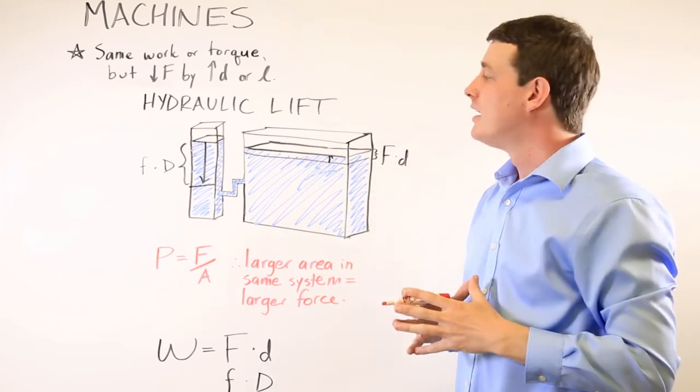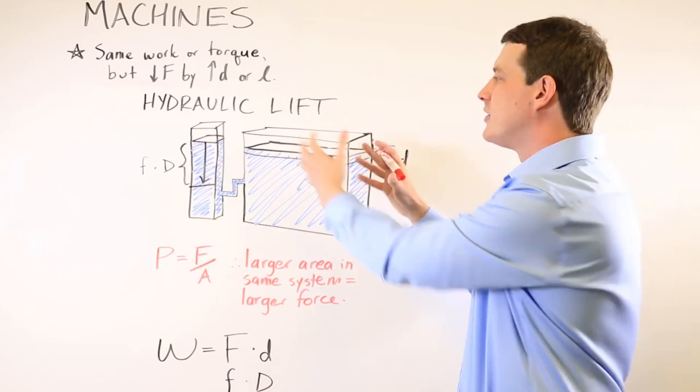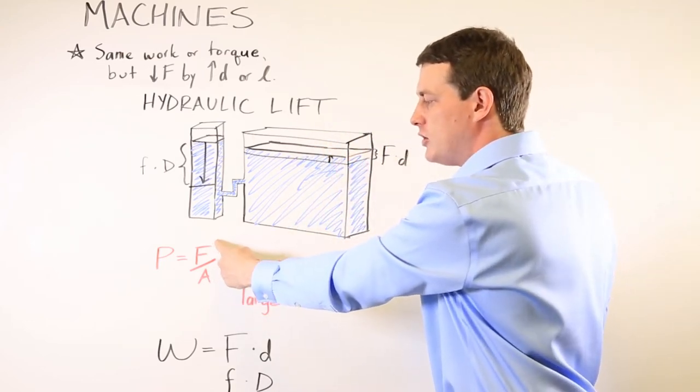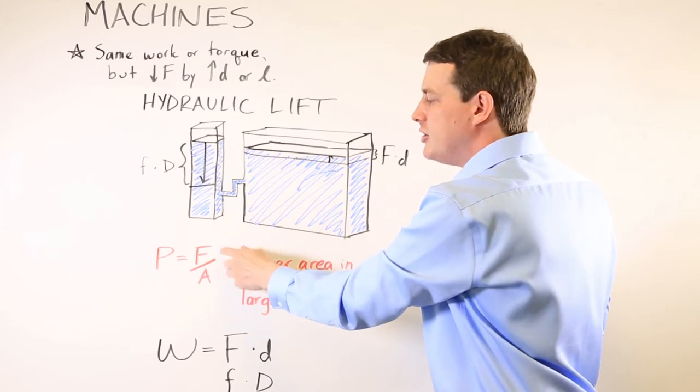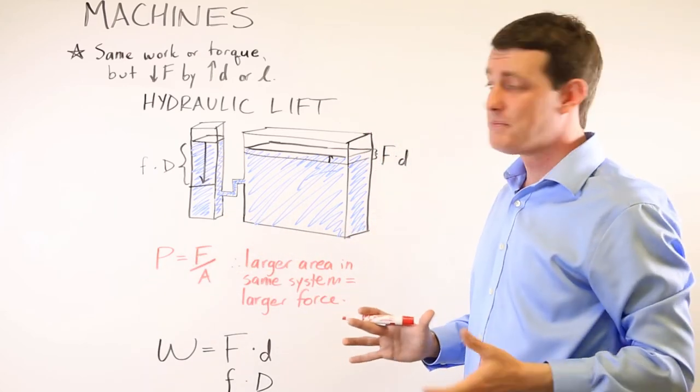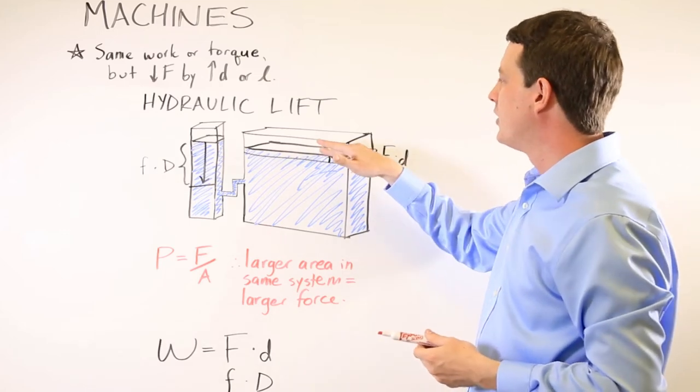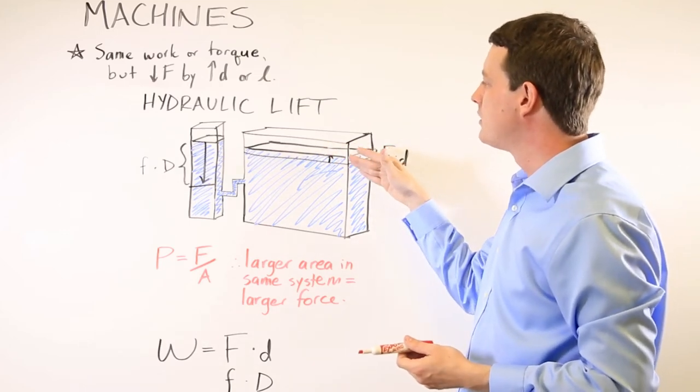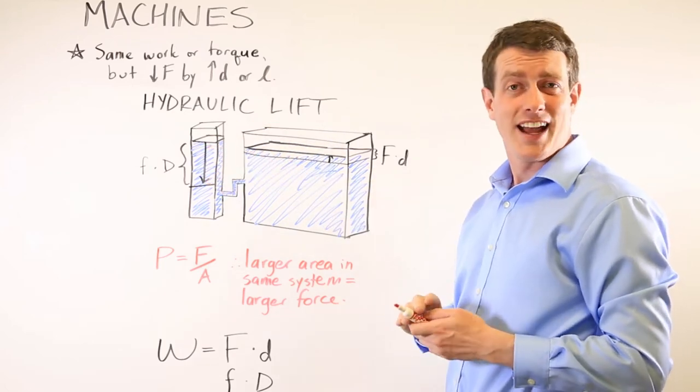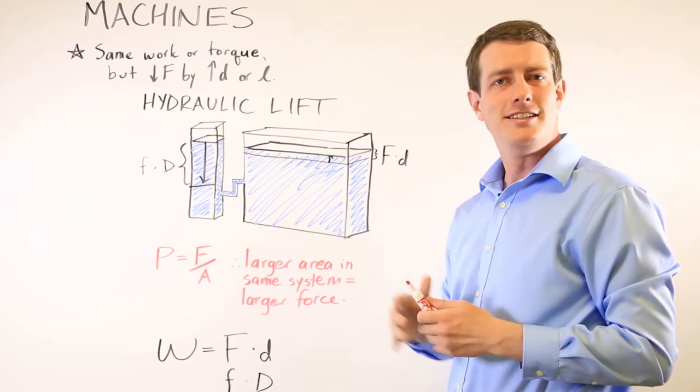The mechanical advantage comes from the difference in the areas. Remember, the area is directly proportional to the force it generates because the pressure is the same throughout the entire system. So if this has an area of 10 square meters, and this has an area of one square meter, you're looking at a 10 to 1 difference in force.